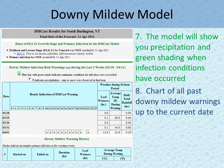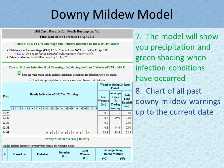The downy mildew forecast model shows you hourly precipitation and indicates when minimum conditions for infection have been exceeded, with green shading and a blue bar on the model. The chart below shows downy mildew warning events through the season. As you can see, none have occurred as of April 11th, when this image was captured.